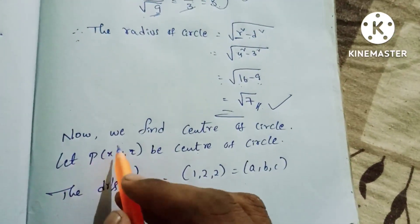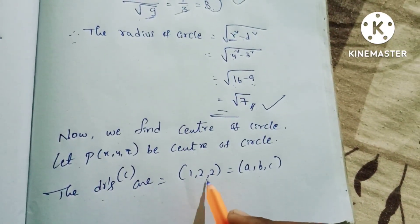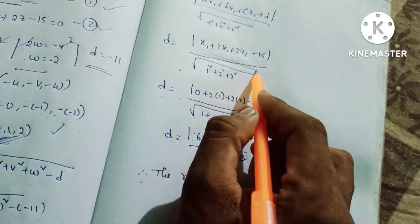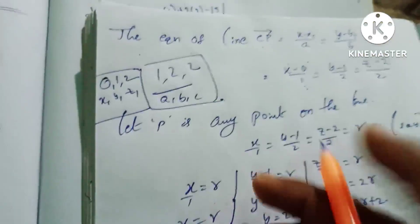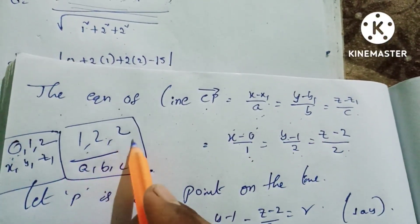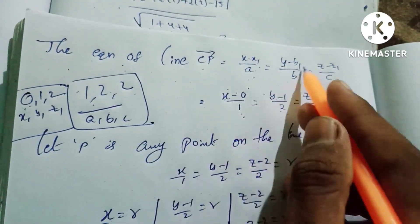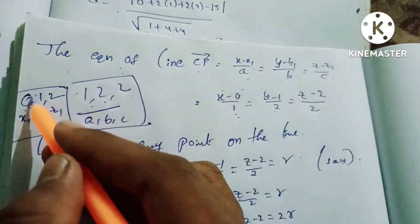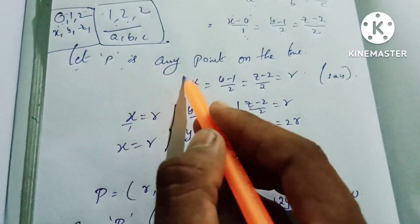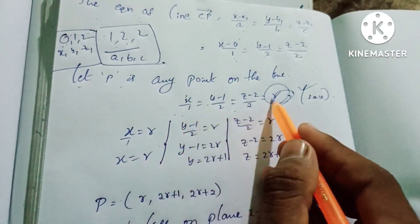Now we find the center of the circle. Let P(x, y, z) be the center of the circle. The direction ratios of the normal to the plane x + 2y + 2z = 15 are (1, 2, 2), which are the coefficients a, b, c. The equation of line CP passing through center C(0, 1, 2) with direction ratios (1, 2, 2) is: (x - 0)/1 = (y - 1)/2 = (z - 2)/2 = r. Let P be any point on this line, so x = r, y = 2r + 1, z = 2r + 2.